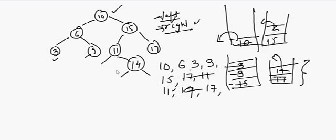The simple steps are: put every node onto the stack, pop it out, print that node, and then push its right child first and left child second, in that order — right first, left last.